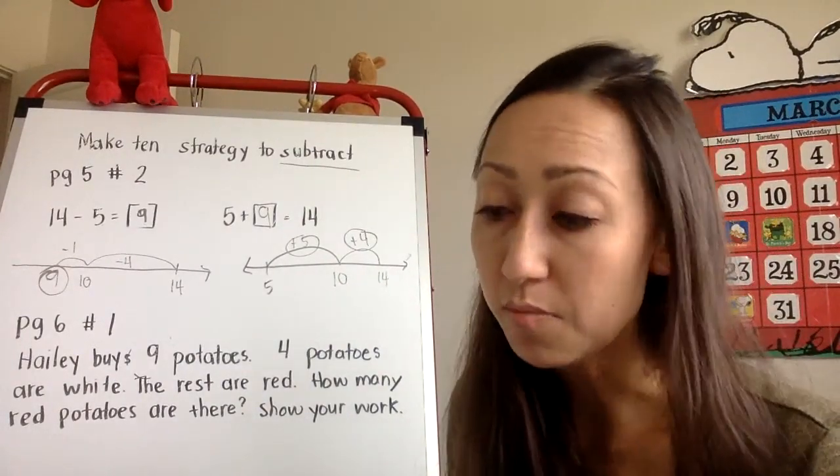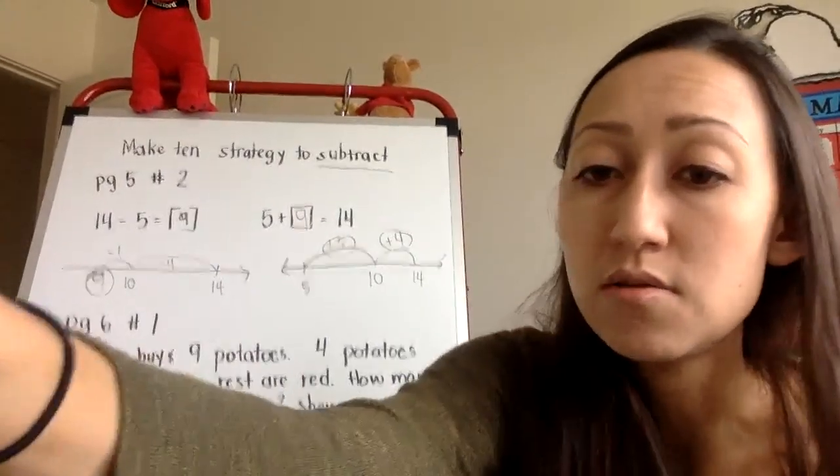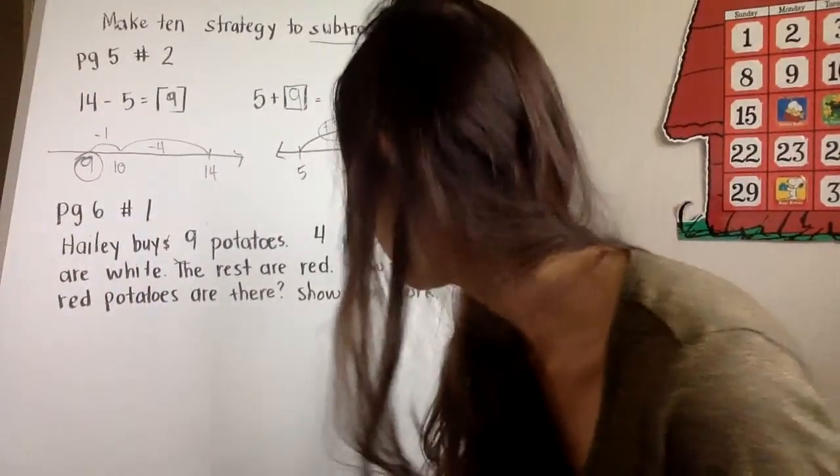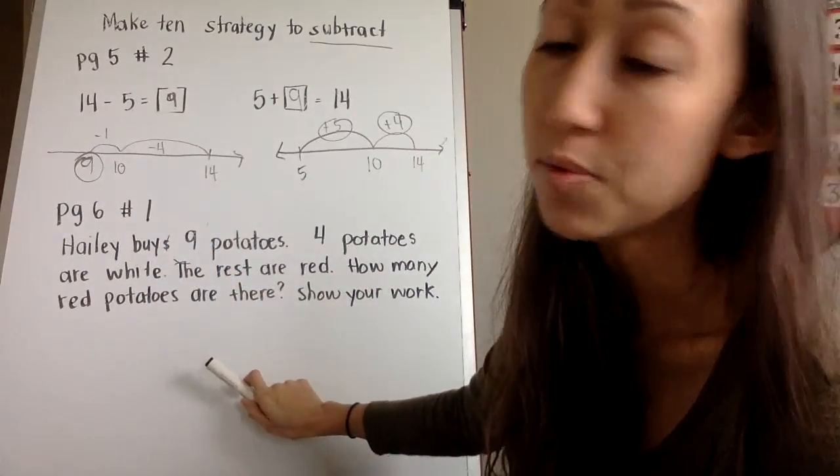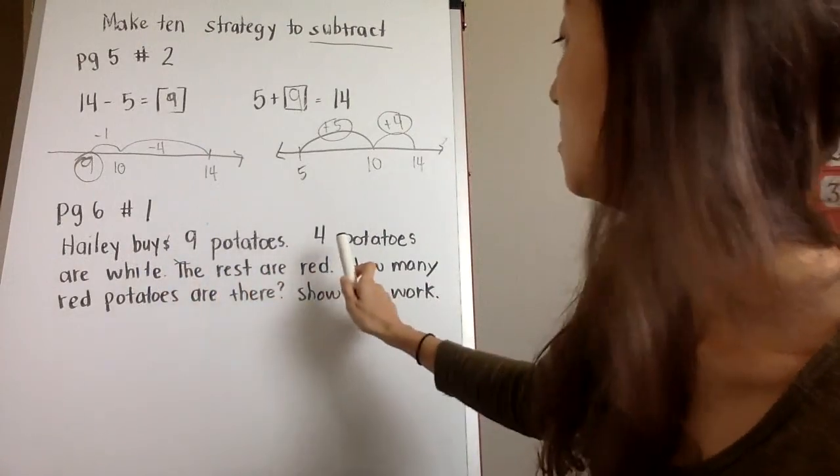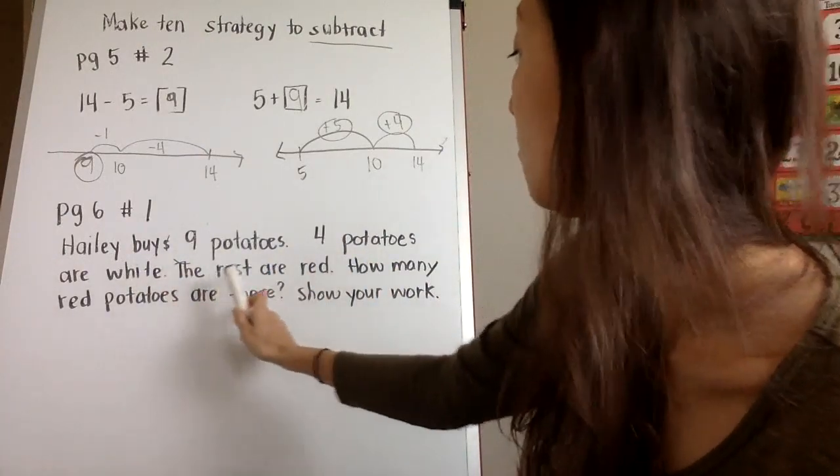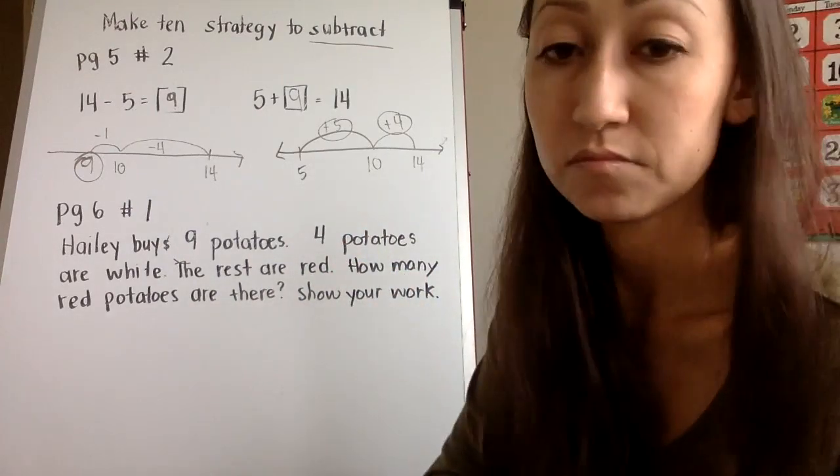And then you do have two more pages and they're word problems. But I think you guys are going to do great on it, because we've done these things in class before. The problem is on page six, number one. You're going to do all the problems. I'm going to share with you one way to do an example here. Haley buys nine potatoes. Four potatoes are white and the rest are red. How many red potatoes are there? Show your work.